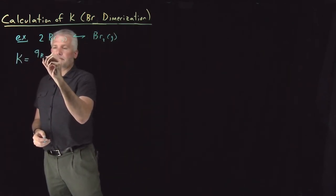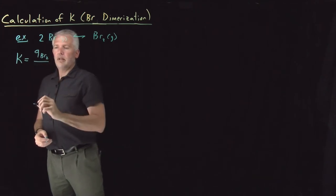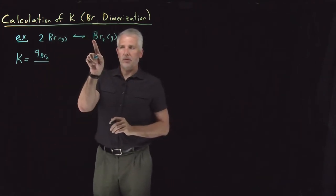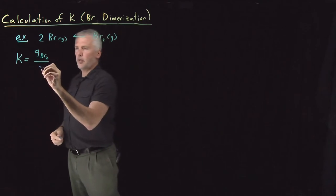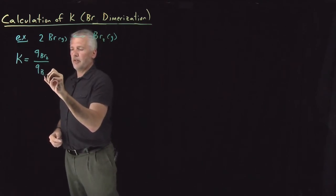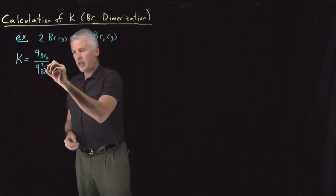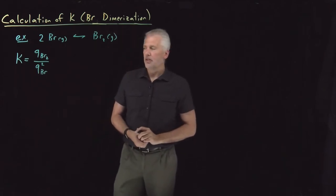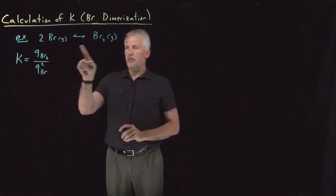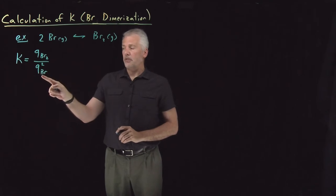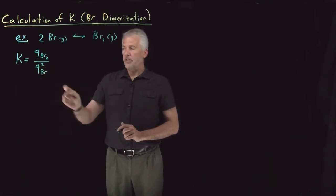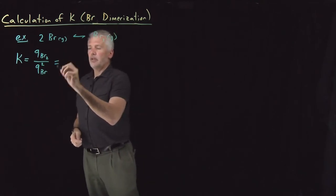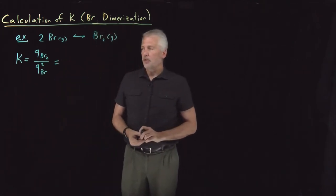That's going to be partition function of products raised to their stoichiometric coefficients over partition functions of reactants raised to their stoichiometric coefficients. So as long as we can write down partition function of Br₂, which we've already done, partition function of Br atoms, which is even easier, then we can determine what this equilibrium constant is going to be.